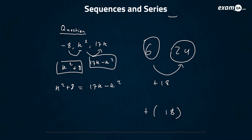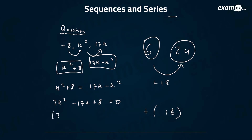We can say k squared plus eight equals 17k minus k squared, and then it's basically easy to solve — you just have to find k. It looks like a quadratic, so bring everything to one side: plus k squared both sides gives 2k squared, then minus 17k from both sides. This factorizes, and it gives k equals one half or k equals eight. So we've got two possible values of k.